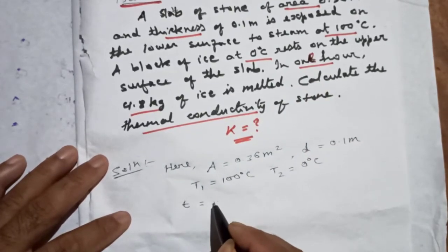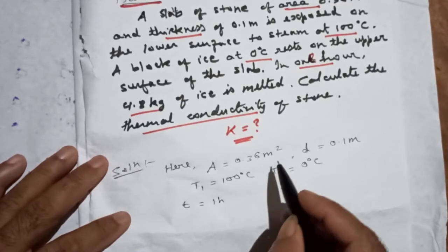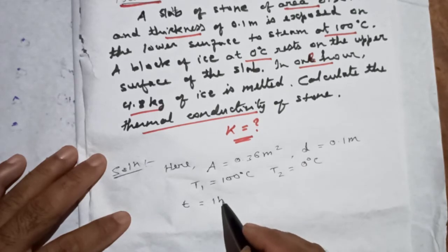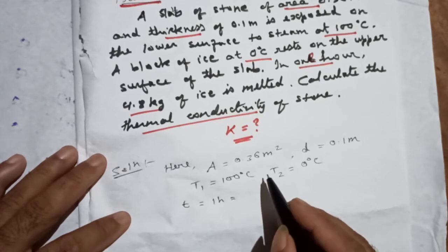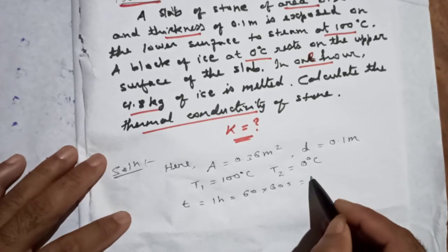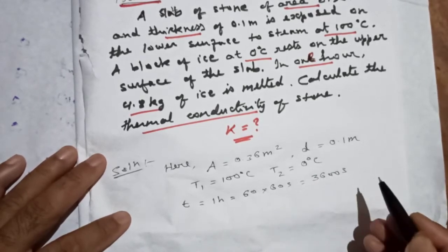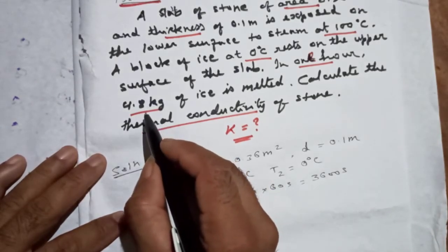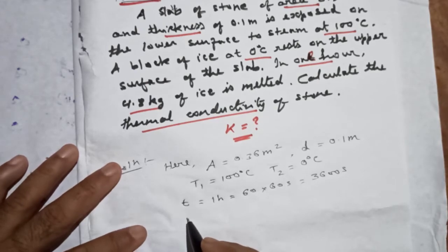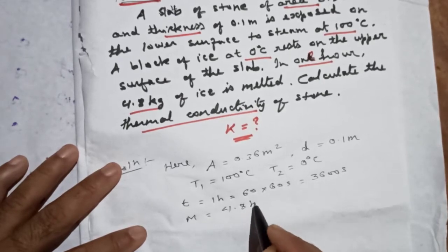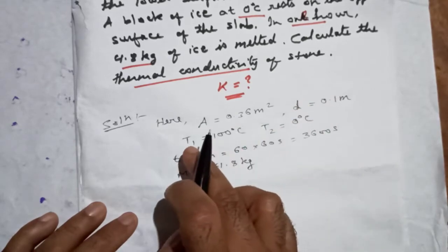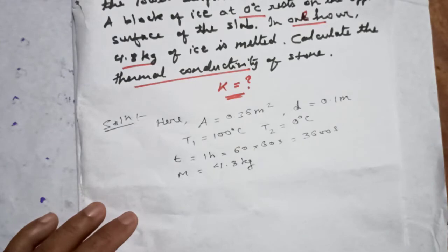The time is one hour. Since we are working in SI units, we have to convert one hour into seconds — multiply 60 minutes by 60 seconds — so this becomes 3600 seconds. And 4.8 kg is the mass of ice.